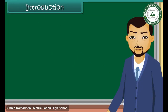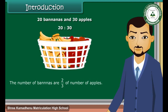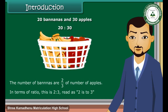Ratio means comparing two quantities. A basket has two types of fruits: 20 bananas and 30 apples. The ratio of the number of bananas to the number of apples is equal to 20 is to 30. The number of bananas are 2 upon 3 of the number of apples. In terms of ratio, this is 2 is to 3, read as 2 is to 3.